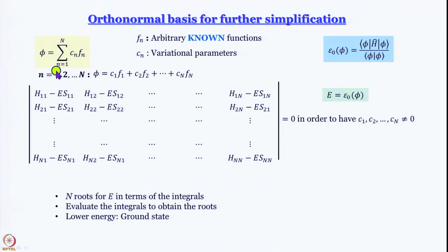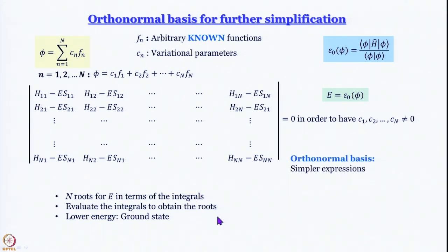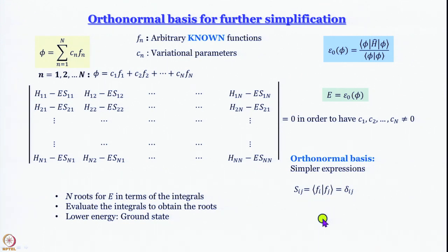Even before going there, if we simply write this linear combination, no matter whether the f_n's are orthonormal or not, you will get a secular determinant — last time we had a 2×2 determinant; this will be an n×n determinant. We get n roots, and the one with lower energy will be the ground state. When we use an orthonormal basis, expressions become simpler because S_ij equals δ_ij: when i = j you get 1 (since the functions are normalized).